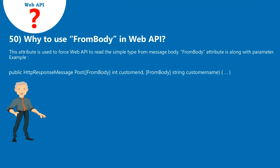Question 50: Why use the FromBody attribute in Web API? This attribute is used to force Web API to read a simple type from the message body. The FromBody attribute is used along with the parameter. Example shown below.